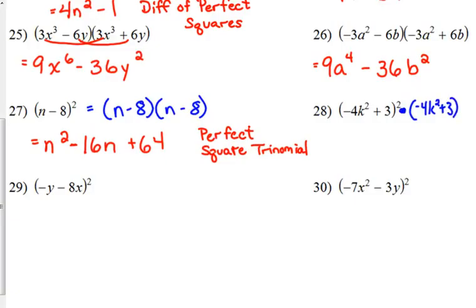And I'm kind of out of room, so I'm just going to rewrite it this way. Now mark it out and go from there. So when we multiply this one, negative 4k squared times negative 4k squared is positive 16k to the 4th. The outside gives us negative 12k squared. The inside is going to give us the exact same thing, so that's going to give us negative 24k squared in the middle. And 3 times 3 is positive 9.